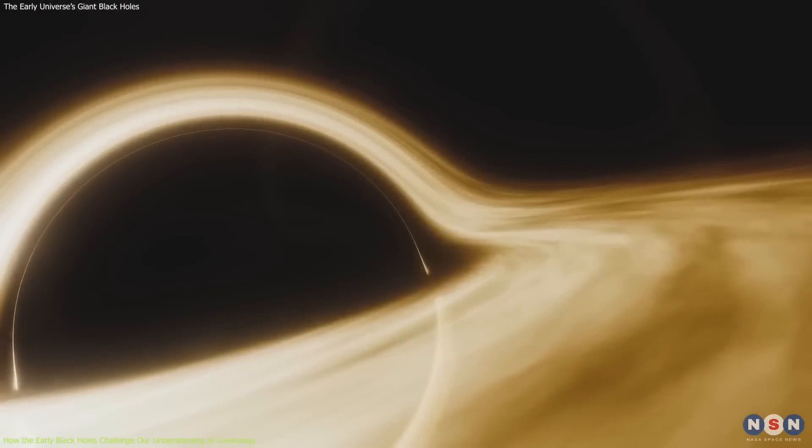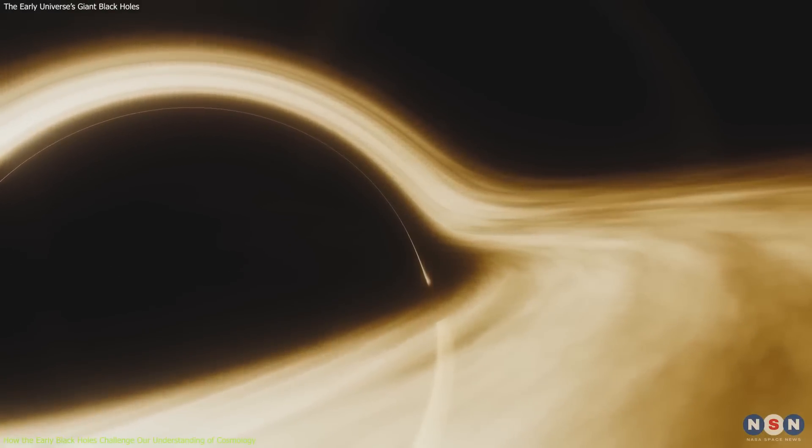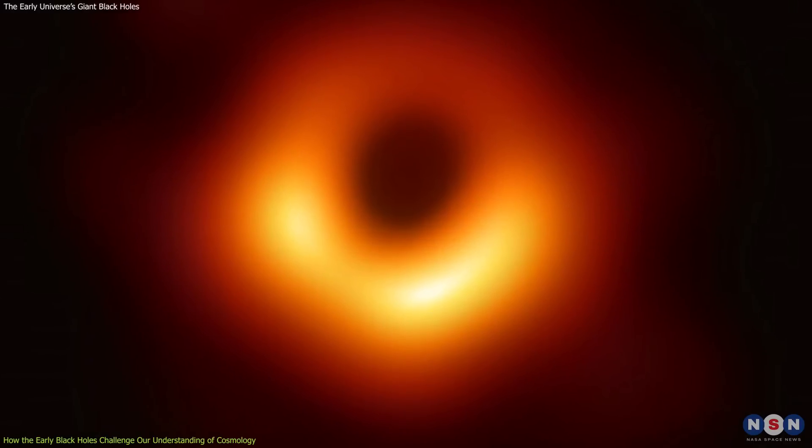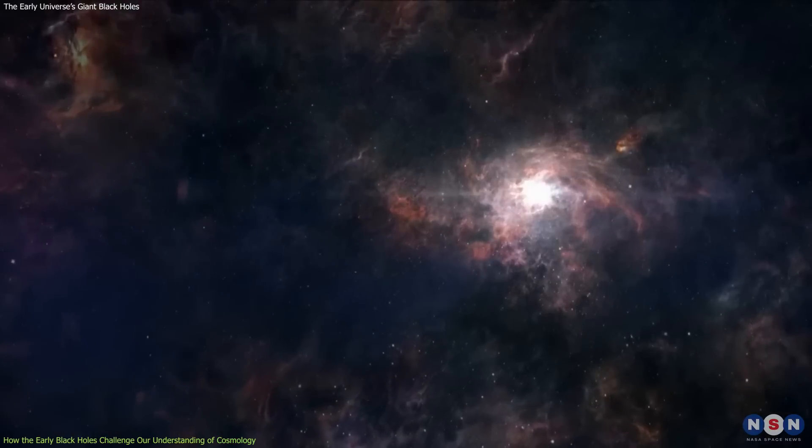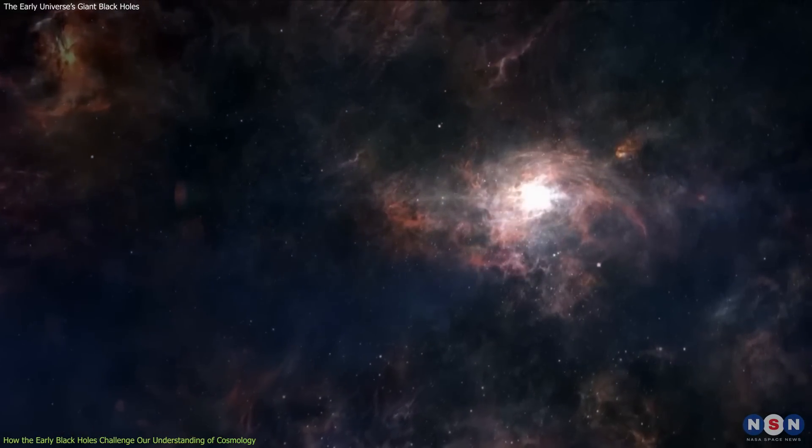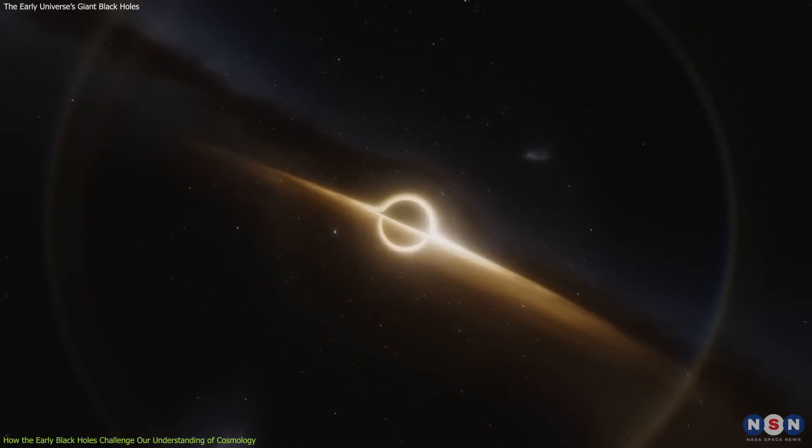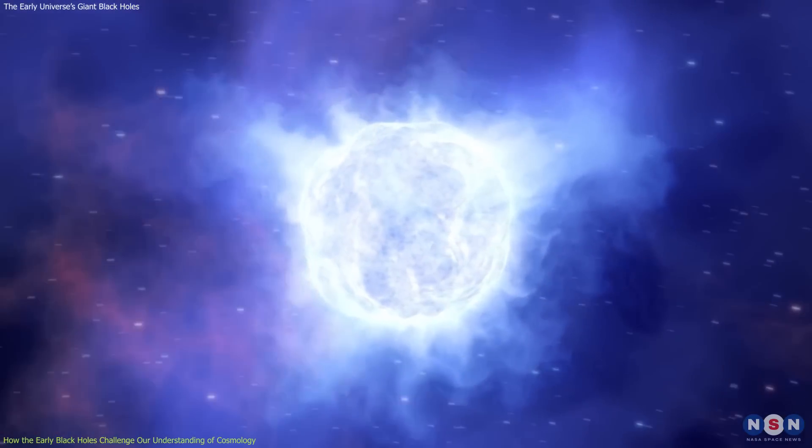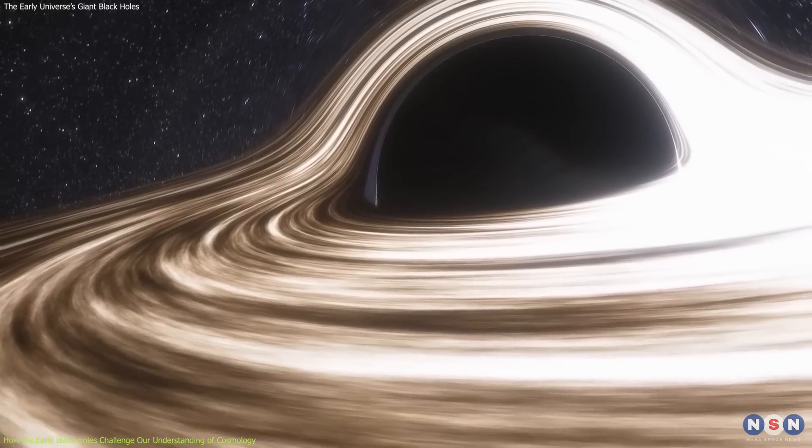The problem with these supermassive black holes is that they seem to appear too soon in cosmic history. Some of them are as old as 13 billion years, meaning they formed when the universe was less than a billion years old. But how did they get so big so fast? Even if they started as stellar mass black holes and grew by accreting matter at the maximum rate allowed by the Eddington limit, they would not have enough time to reach such enormous sizes.